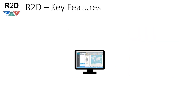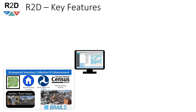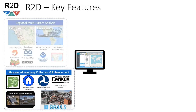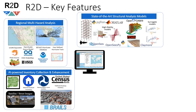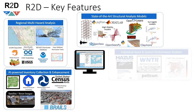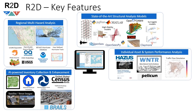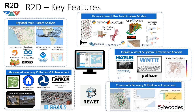R2D has many features, from AI-powered inventory collection and enhancement and regional multi-hazard analysis, to state-of-the-art structure analysis models, individual asset and system performance analysis, and community recovery simulation and resilience assessment.